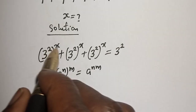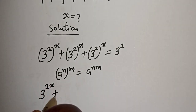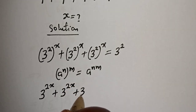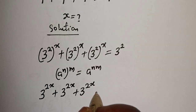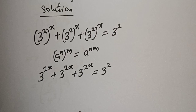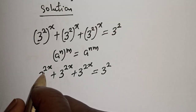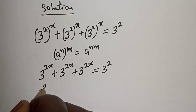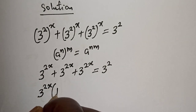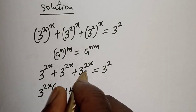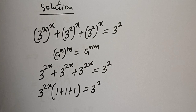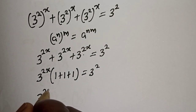Applying that rule, each term becomes 3 raised to the power 2s. So we have 3 raised to power 2s plus 3 raised to power 2s plus 3 raised to power 2s. Since 3 raised to power 2s is common, let's bring it out: 3 raised to power 2s times the bracket 1 plus 1 plus 1 is equal to 3 raised to power 2s times 3.